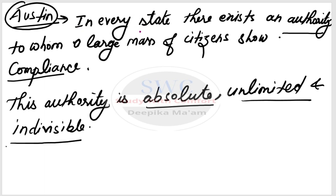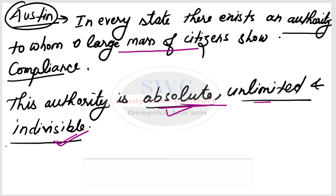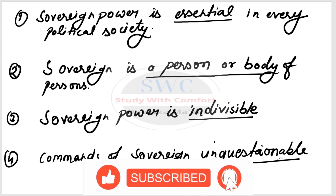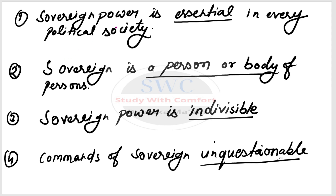John Austin says that in every state there exists an authority to which the large mass of citizens show compliance — they habitually obey. This authority is absolute, unlimited, and indivisible. It is the supreme power. This authority can issue any command, and it is indivisible — it cannot be shared with anyone else. This is the power of the sovereign according to Austin's monistic theory.